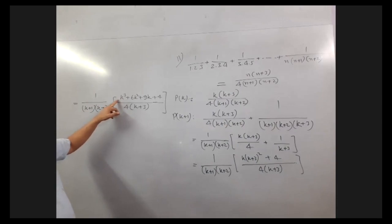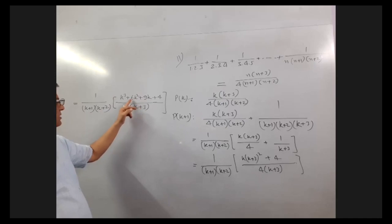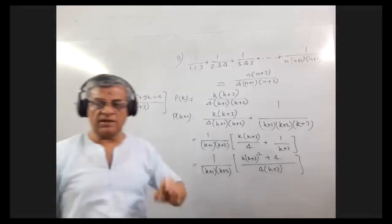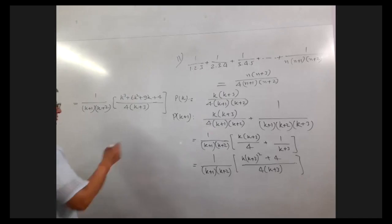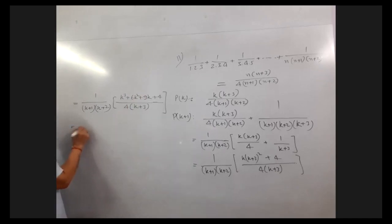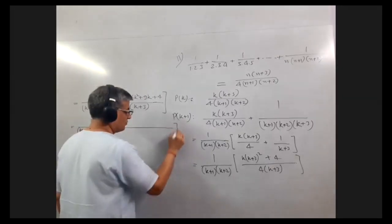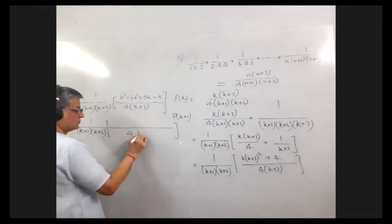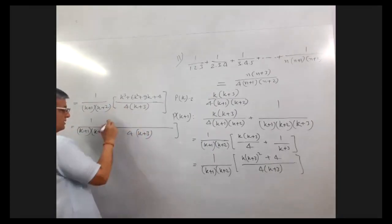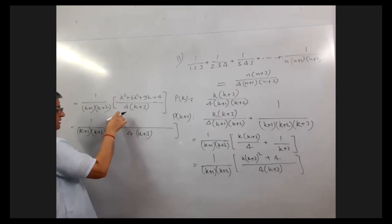Now putting minus 1 here, this will become minus 1 and this will become minus 9. We have to keep in mind that we need to make k plus 1 a factor, and it will form in this.